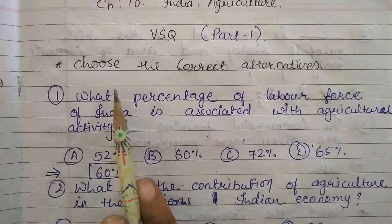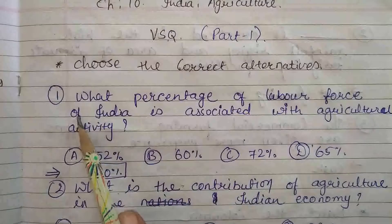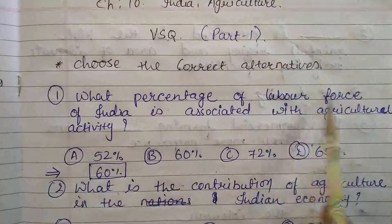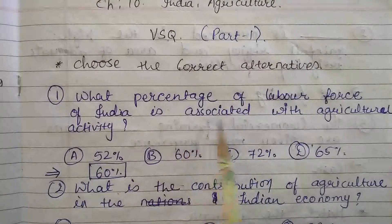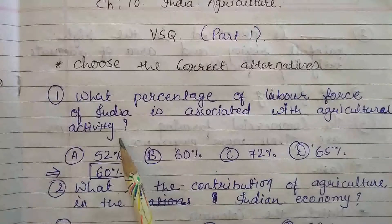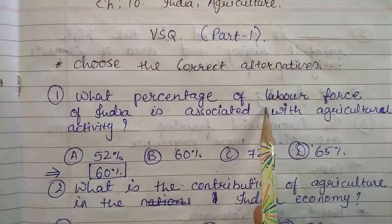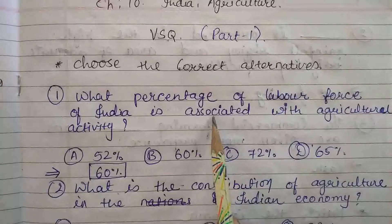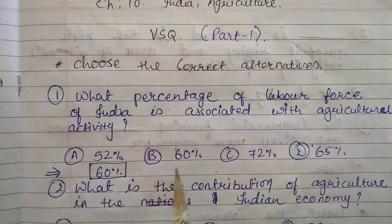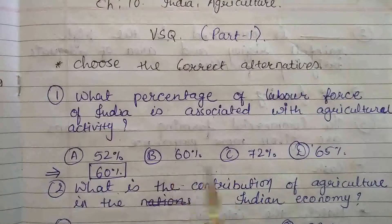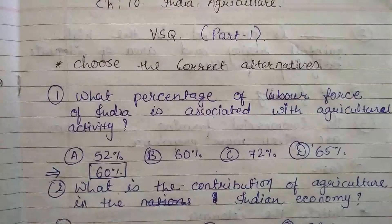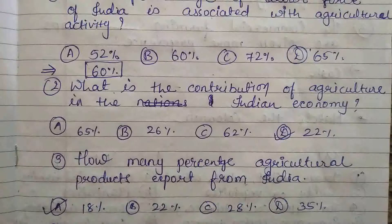The first question: choose the correct alternatives. What percentage of the labor force of India is associated with agriculture activity? Bharat ke andar labor force mein se kitne percent log agriculture activity se jude hue hain. Options are 52%, 60%, 72%, and 65%. The answer is 60%.